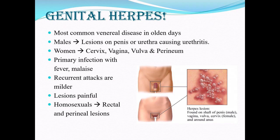Genital herpes was much more common in earlier times. Males develop lesions on the penis or urethra, leading to urethritis. Women will have lesions on the cervix, vagina, vulva, or perineum. It initially starts with fever and malaise, with the same kind of symptoms recurring with the lesions. The lesions are very painful, and in homosexual persons there can be lesions on the rectum and perineal areas.